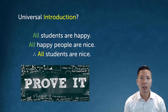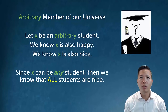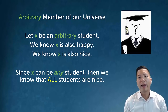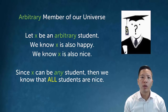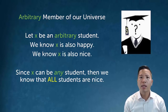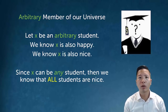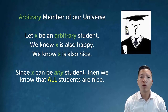That's not practical. So instead, what we typically do is arbitrary-style reasoning — we invoke an arbitrary member of our universe. I'll say something like, let X be an arbitrary student. We know X is also happy. We know X is also nice. And because X can be any student in our universe of discourse, because X is perfectly arbitrary and we know nothing about X, we can conclude that all students are nice.